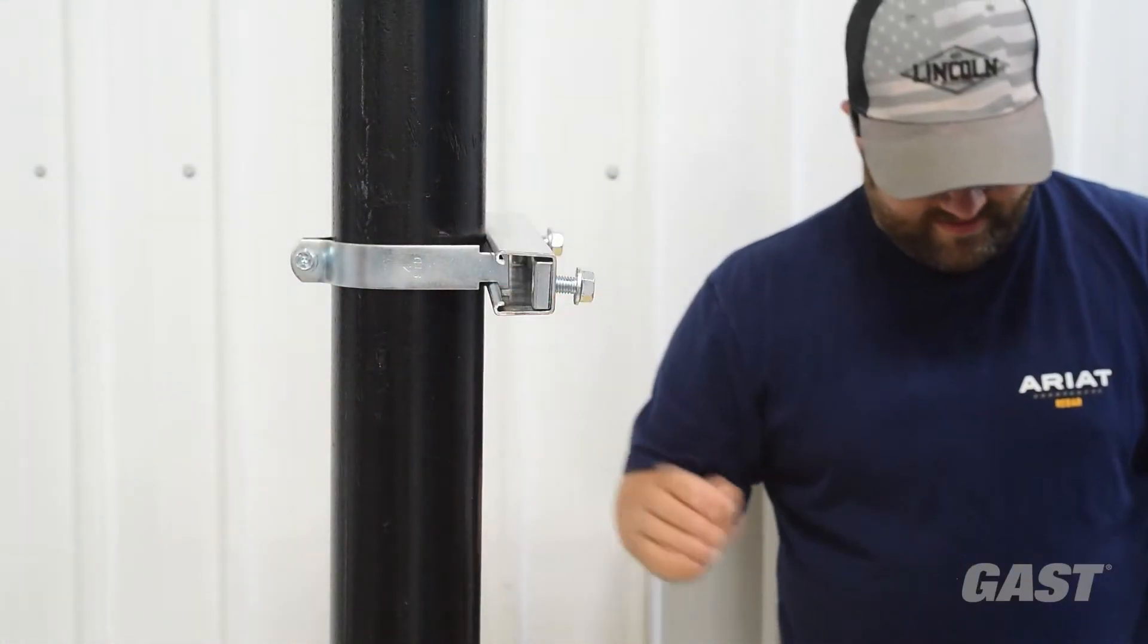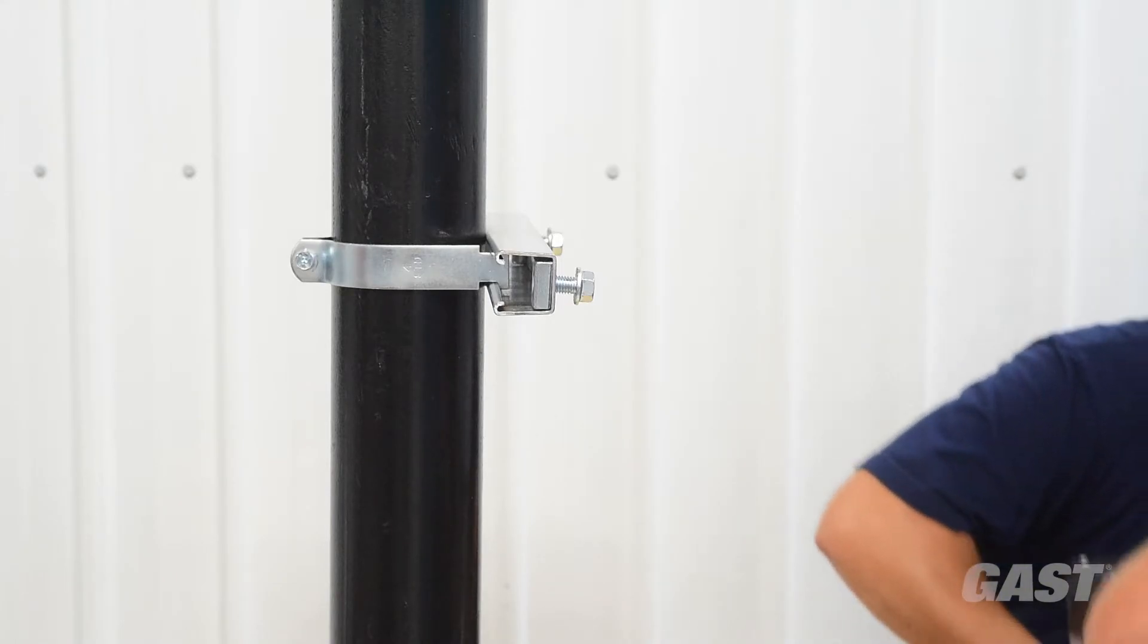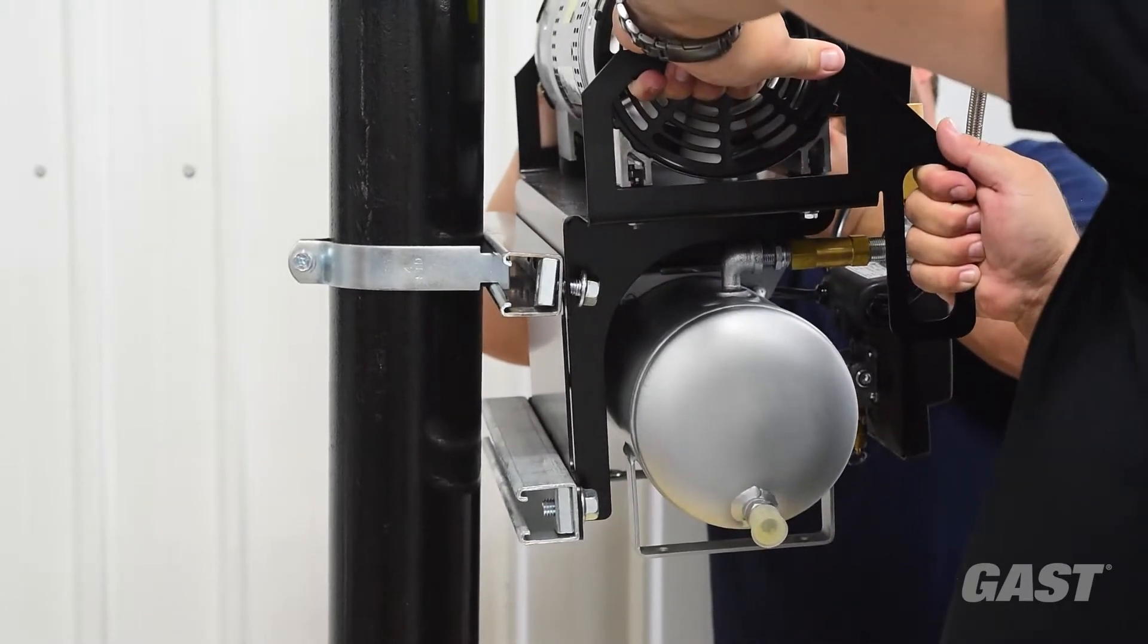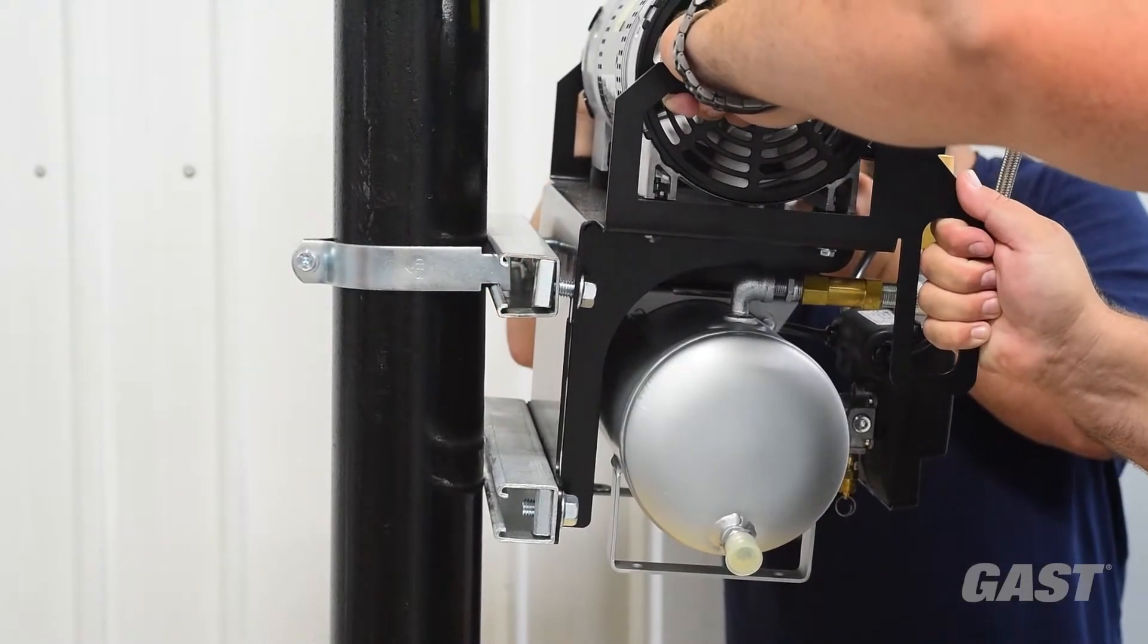As a team of two people, grab the system by the hand cutouts on the frame and lift it up to the top strut channel rail. Hang the top ears onto the mounting bolts.